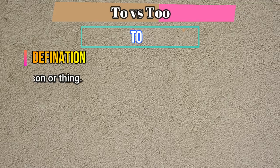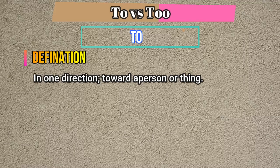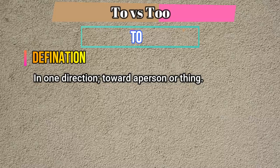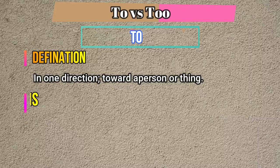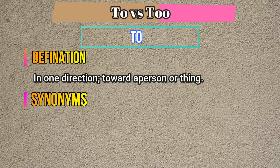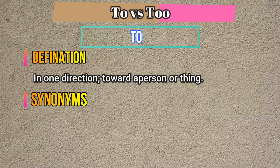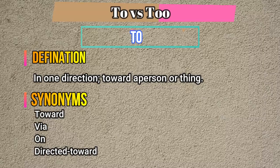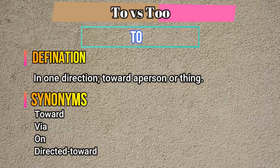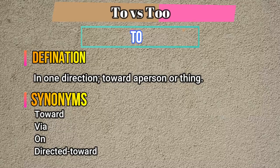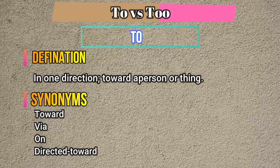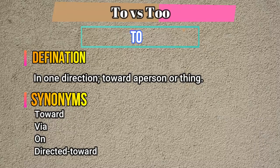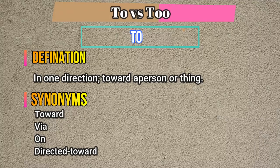The definition of 'to' is: in one direction toward a person or thing. The synonyms of 'to' are: toward, via, on, directed toward.